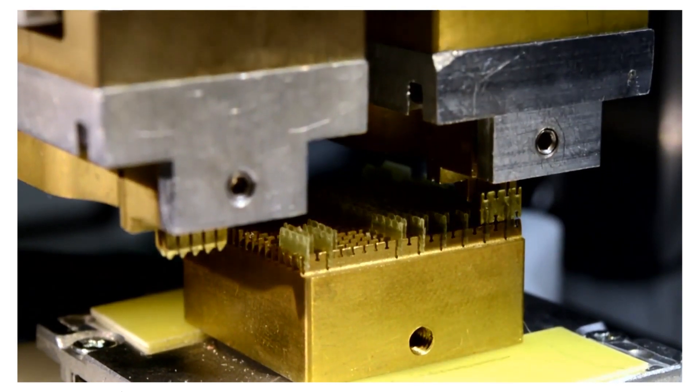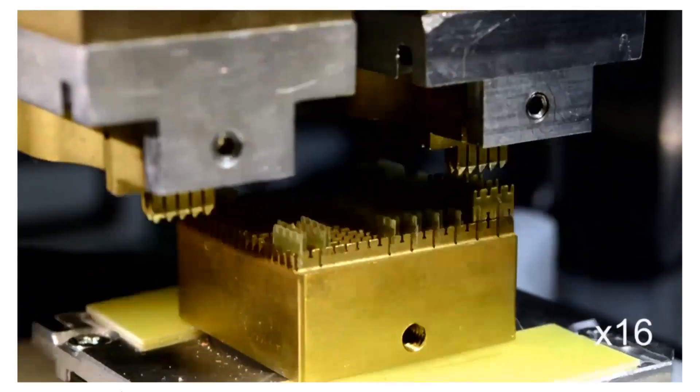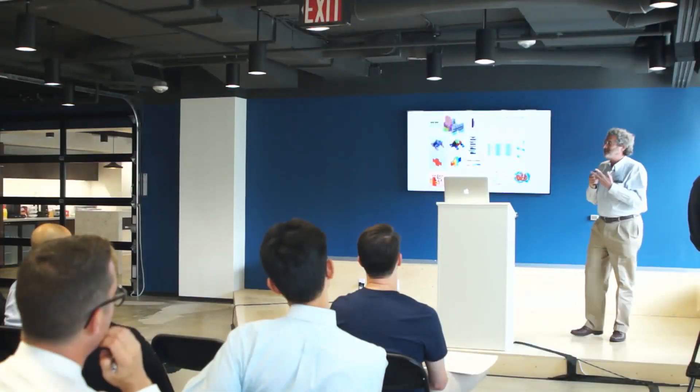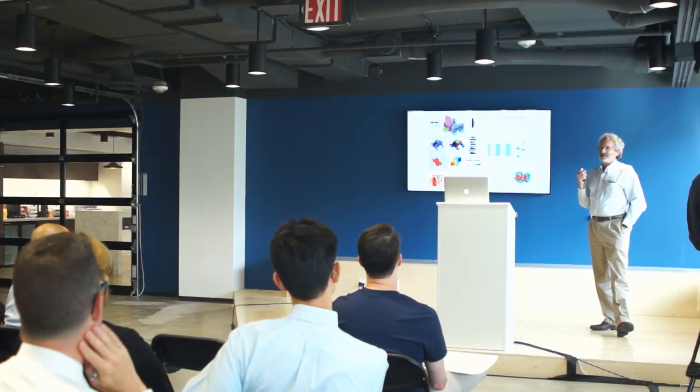And so then the obvious question that raises is, can you make the assembler out of the parts that it's assembling? So can you make an assembler that assembles assemblers out of the parts that it's assembling? And it turns out that's absolutely essential. That's the heart of the whole story.